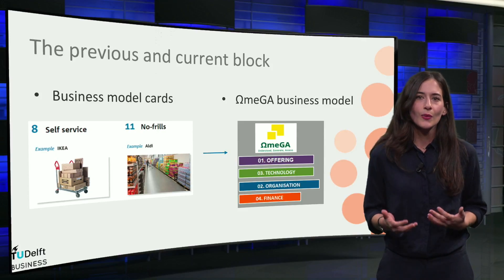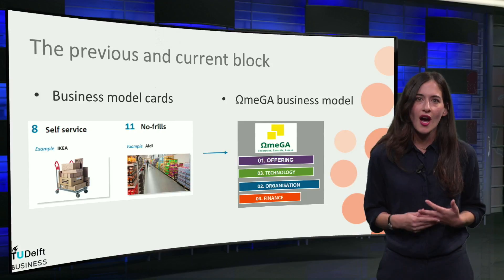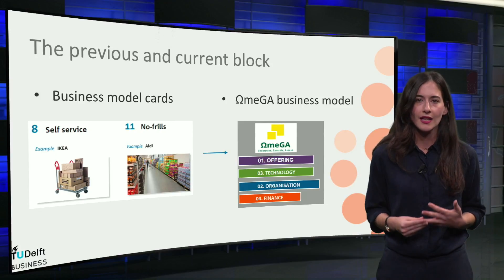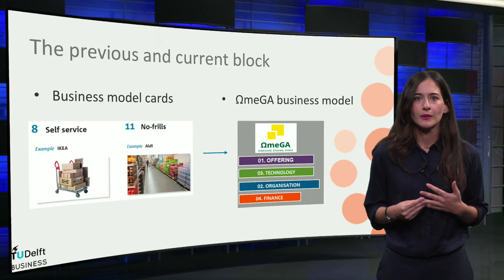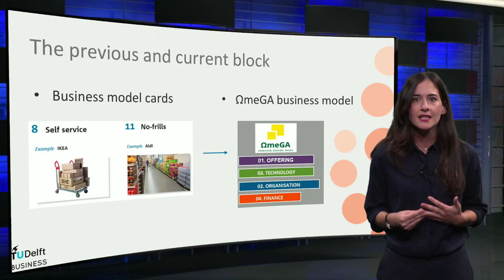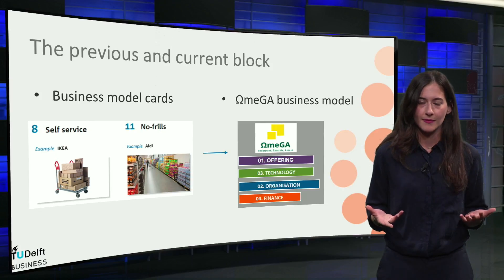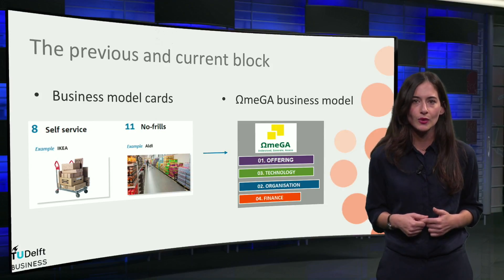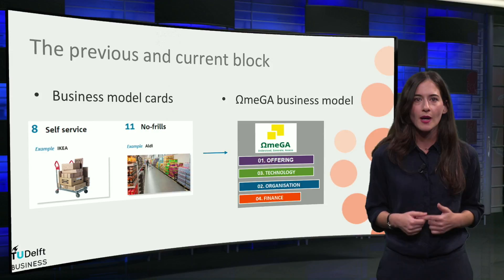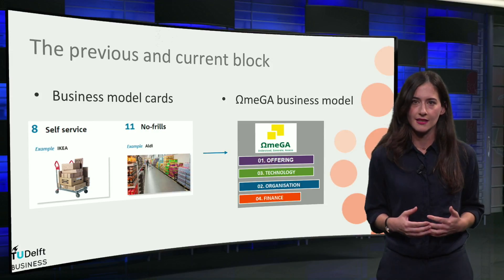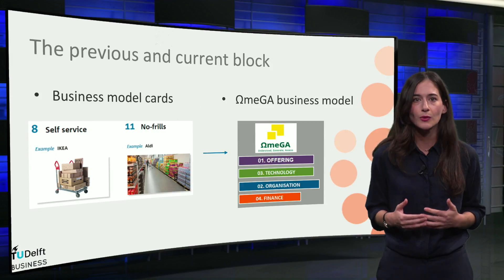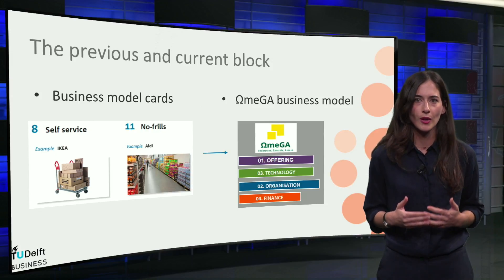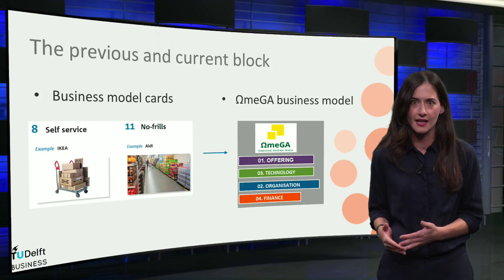You are going to work on a case of how a company can innovate its business model. You will meet the non-existent company Reynolds Anytime and use the Omega Business Model Tool to come up with new business model ideas and how to make a decision on what to do next.